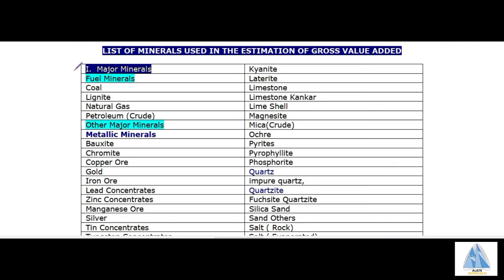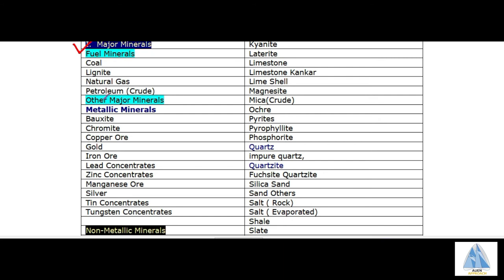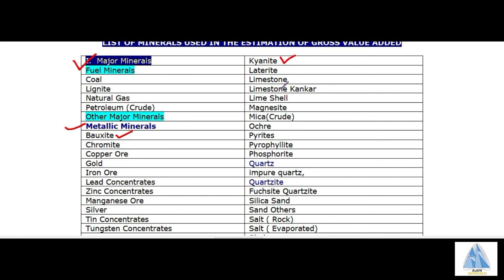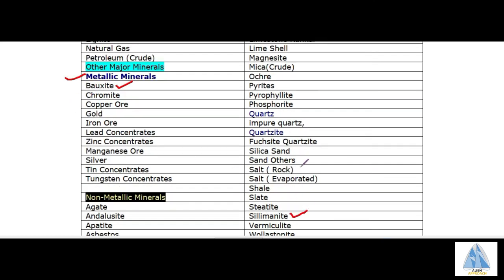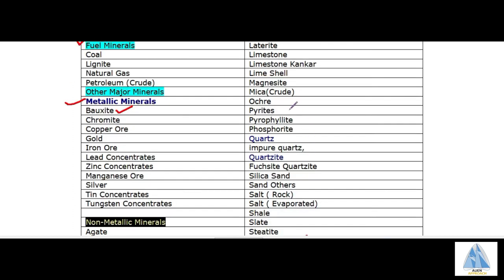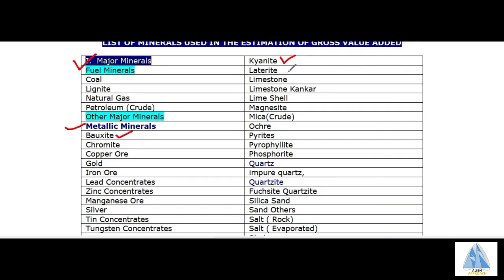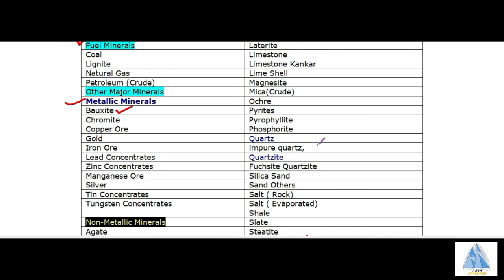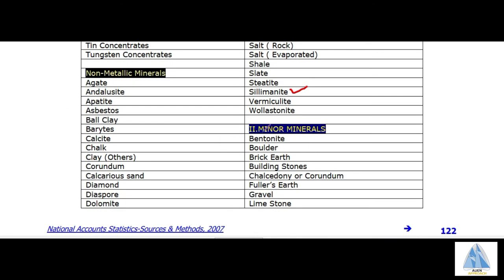We are interested in major minerals. Under the metallic minerals, we have bauxite, kyanite, and siliminite — both siliminite and kyanite are aluminosilicates. As we scroll below, we see that under the heading of minor minerals, the very first name is bentonite. So bentonite should be excluded, and the major minerals of our interest are kyanite, siliminite, and chromite.